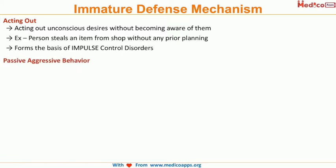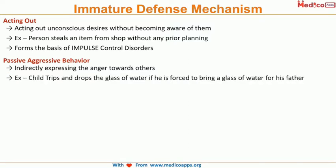Next is the passive aggressive defense mechanism. Here, the person indirectly expresses anger towards others. For example, if a child is forced to bring water for his father and he does not want to do it, he will go and fetch the water, but he will trip and drop the glass of water. This way he is indirectly expressing anger towards others.